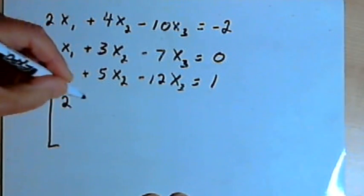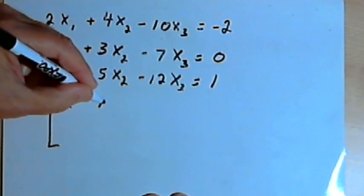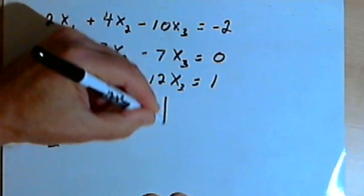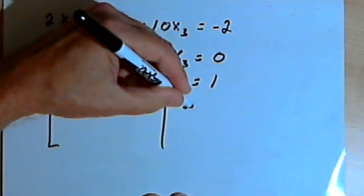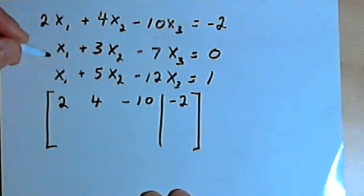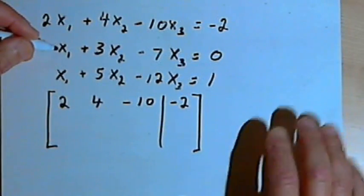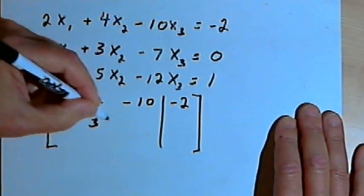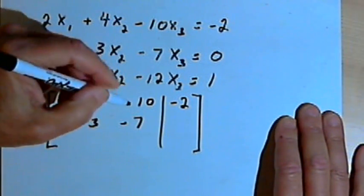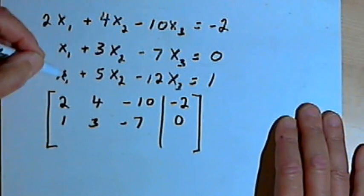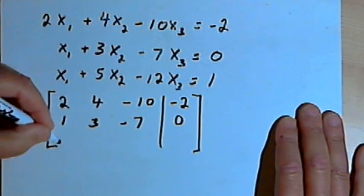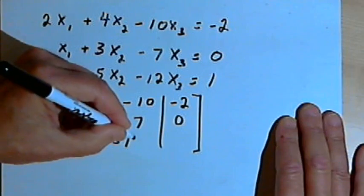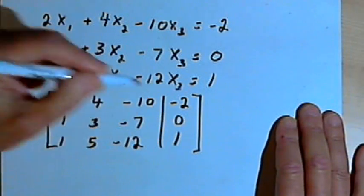The first row will be 2, 4, negative 10, and negative 2. The second row is 1, 3, negative 7, and 0. And the third row is 1, 5, negative 12, and 1.